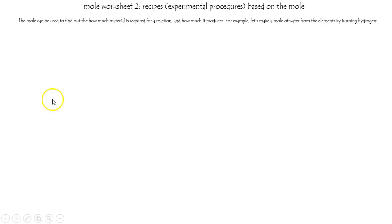I'll read this briefly and focus on the important parts. The mole can be used to find out how much material is required for a reaction and how much it produces. For example, let's make a mole of water from the elements by burning some hydrogen, which burns rapidly.